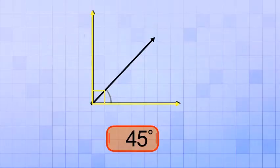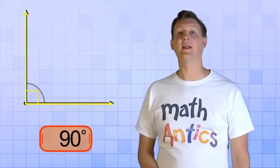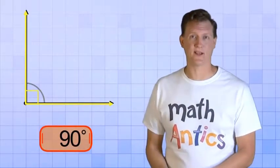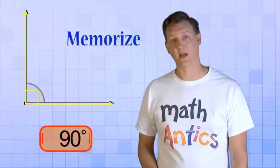Let's keep on rotating to see if you're right. 50, 60, 70, 80, and 90. Yup, a right angle is exactly 90 degrees! And that is super important to memorize because right angles are used all the time in geometry.